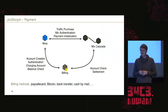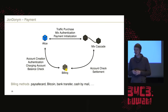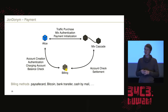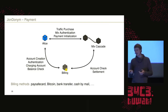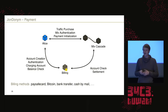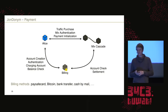Because having a payment service is quite unique, let's look at it: Alice needs to buy some traffic, and this information is provided to the mix cascade. The mix cascade checks with the billing service whether Alice has paid. Billing methods include anonymous pay-safe card, sending cash by mail, or bank transfer — though bank transfer may not be in the interest of someone who wants to stay really anonymous.